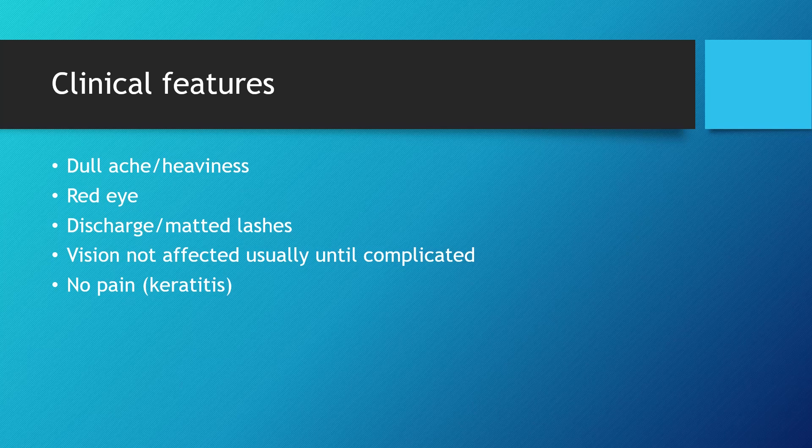In exams you are asked what are the common causes of red eye — conjunctivitis is the commonest cause. The redness is due to inflammation. Patients can also suffer from discharge, which can result in matted lashes. Vision is usually not affected in conjunctivitis unless it is complicated and the lesion also involves the cornea. Normally with conjunctivitis the patient suffers from red eye and dull ache or feeling of heaviness, but vision is unaffected.